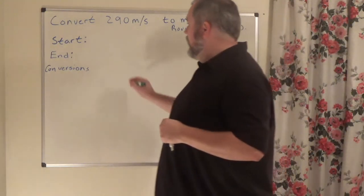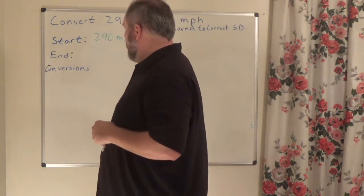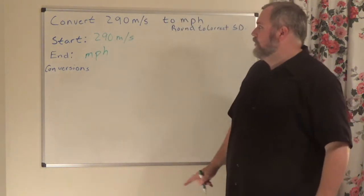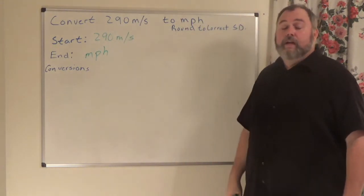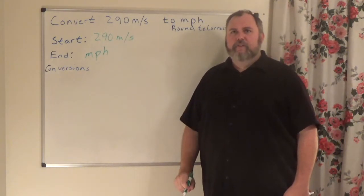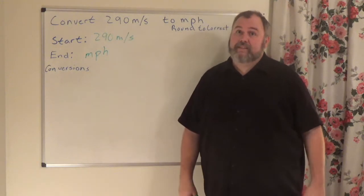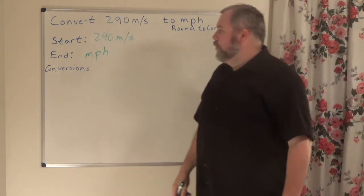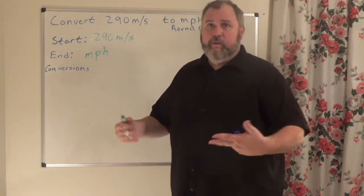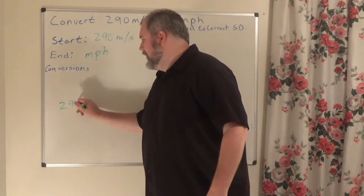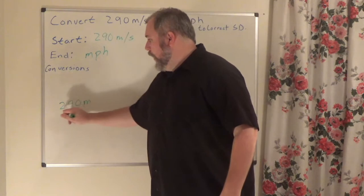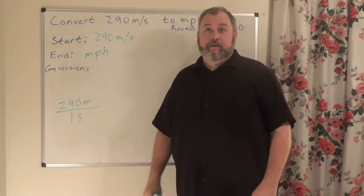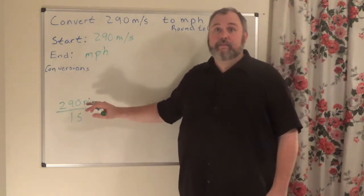What am I starting with? 290 meters per second. What's my end game? Miles per hour. The biggest confusion: this is 'm' for meters and this is also 'm' for miles — you need to understand this is meters per second, and we're converting to miles per hour. My start is a fraction: 290 meters over one second.